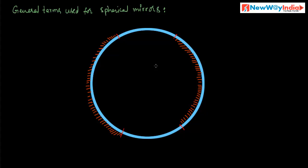These are the two spherical mirrors. This one has the reflecting surface inwards and this one has the reflecting surface outwards. The mirror with the coated surface outwards and the reflecting surface inwards is called a concave mirror. In the concave mirror, the reflecting surface is towards its hollow side. The mirror where the reflecting surface is towards its bulging side is called a convex mirror.